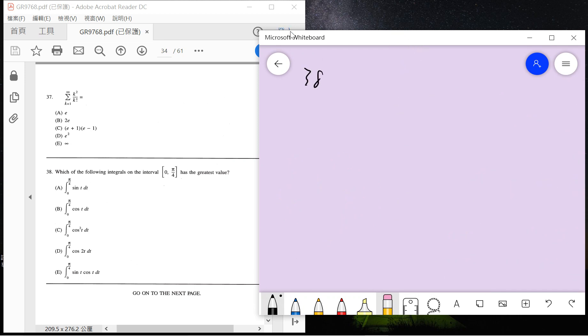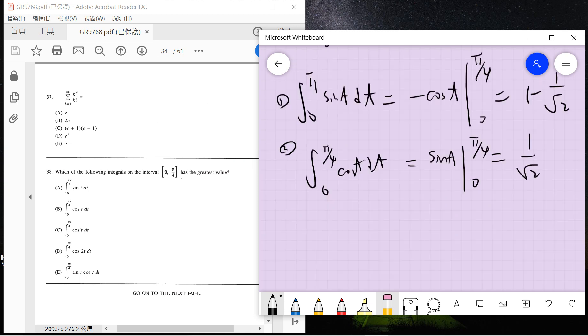Which of the following integrals is greater value? To solve this, I just do the integrals very quickly. Cosine pi over four is one over square root of two. The second is sine t from zero to pi over four, which is also one over square root of two.